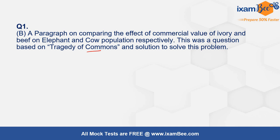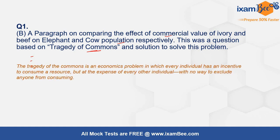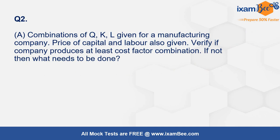Part B of the first question was on the Tragedy of Commons concept. A paragraph was given about elephant and cow populations, discussing the effect of the commercial value of ivory on elephant population and beef on cow population. Several questions followed this paragraph. The Tragedy of Commons is a problem where individuals have an incentive to consume a common resource at the expense of other individuals, and there is no way to exclude anyone from consuming that common resource.